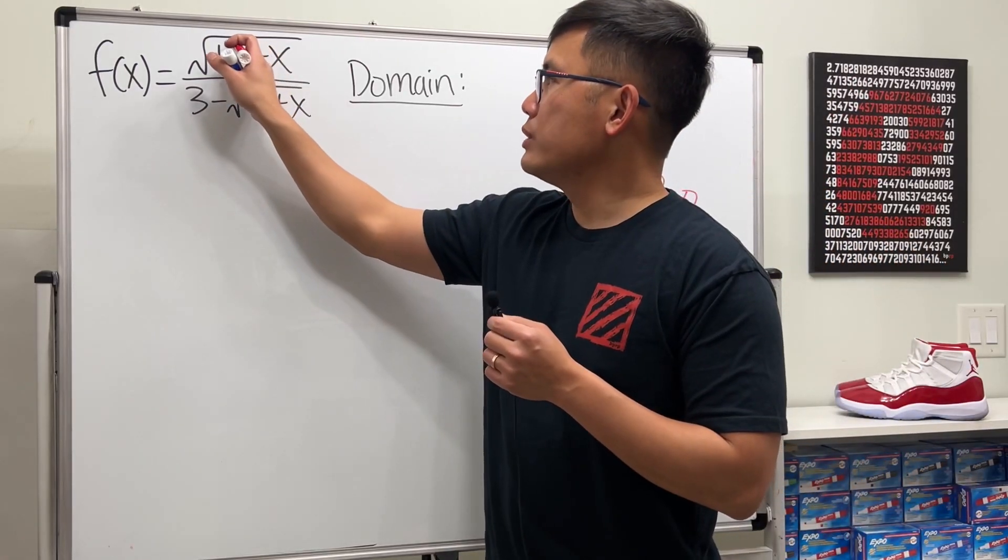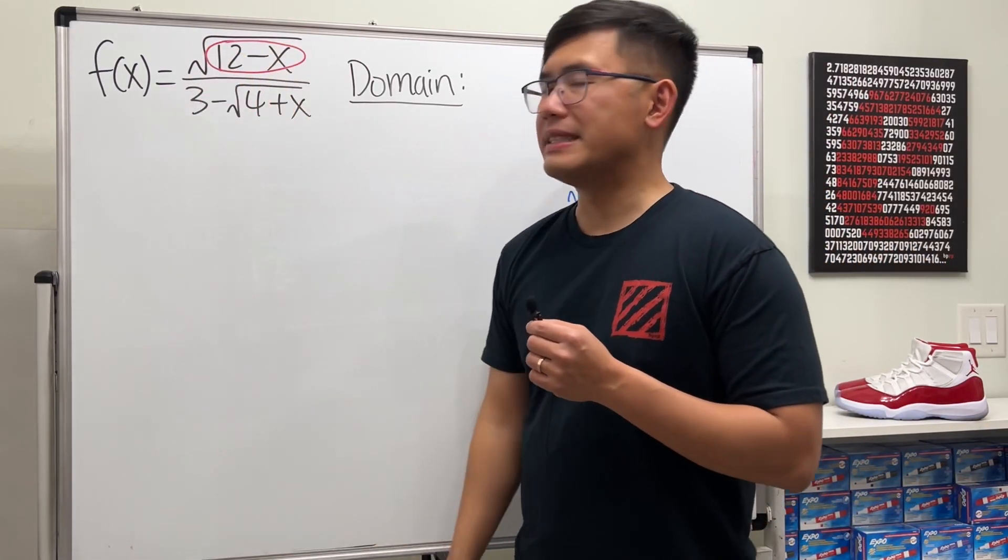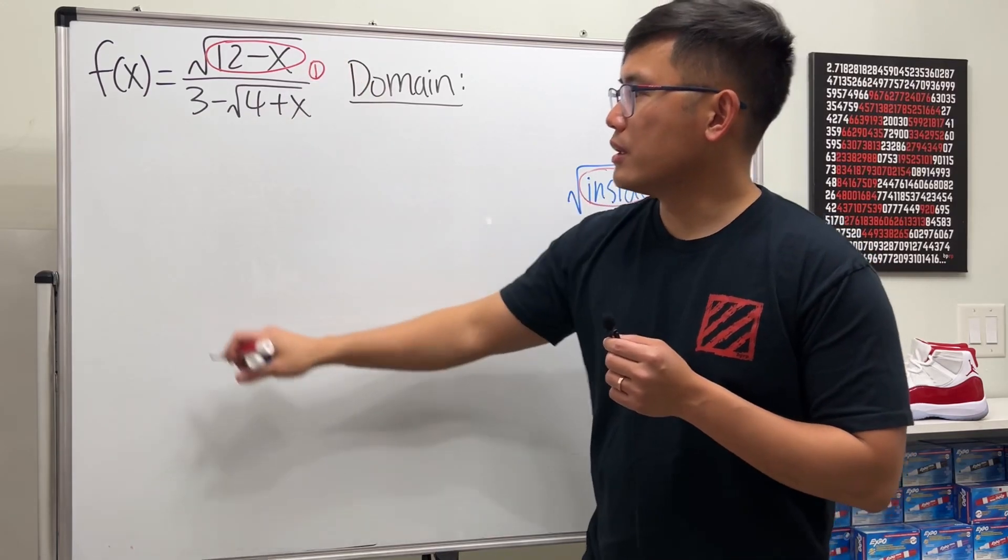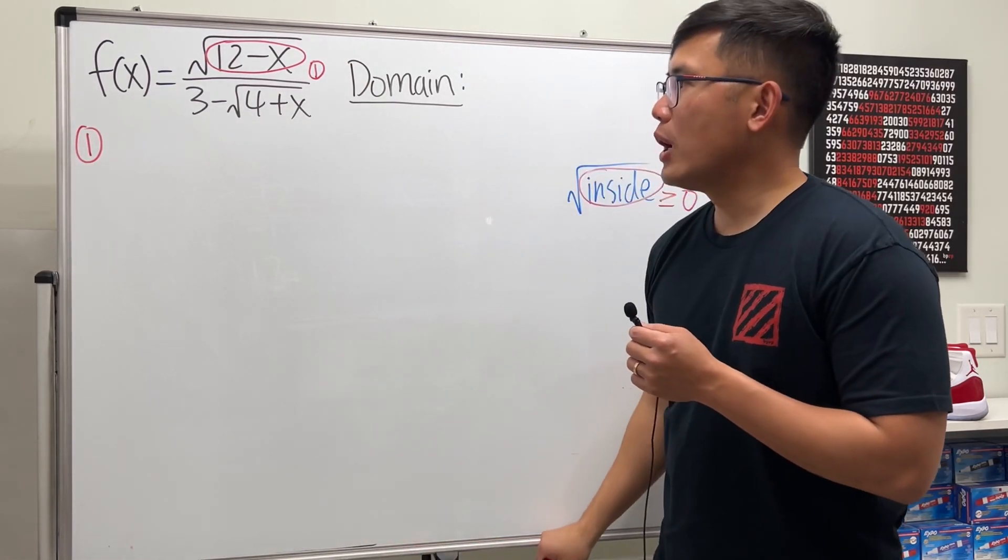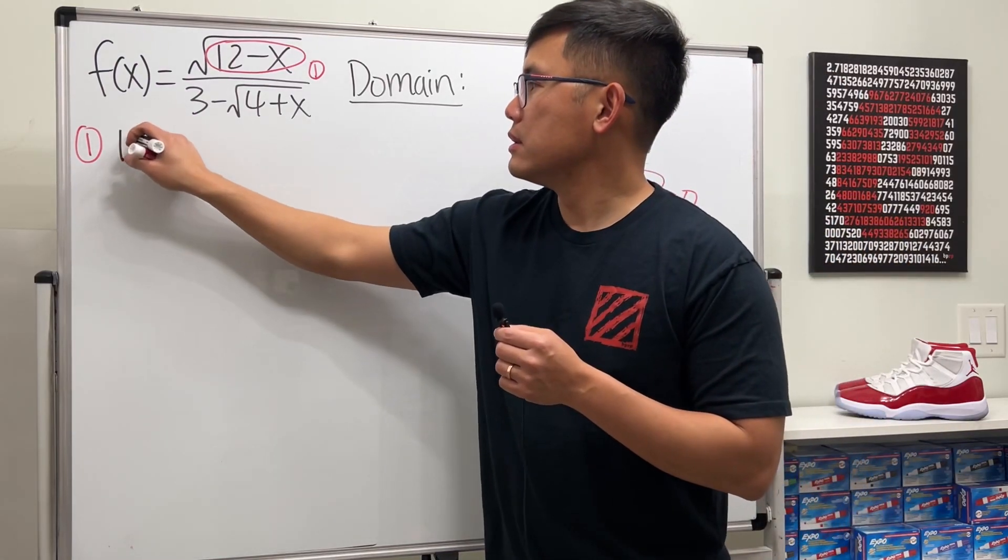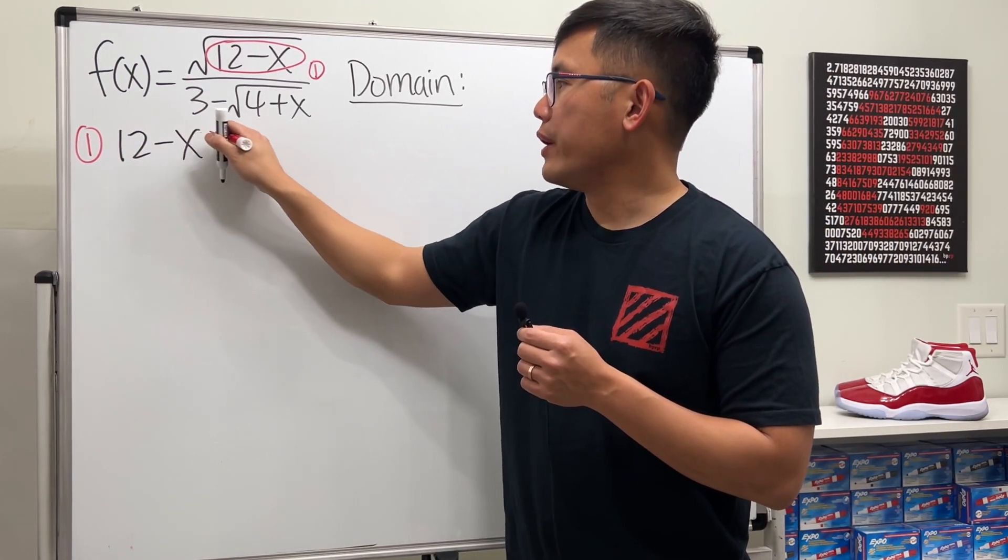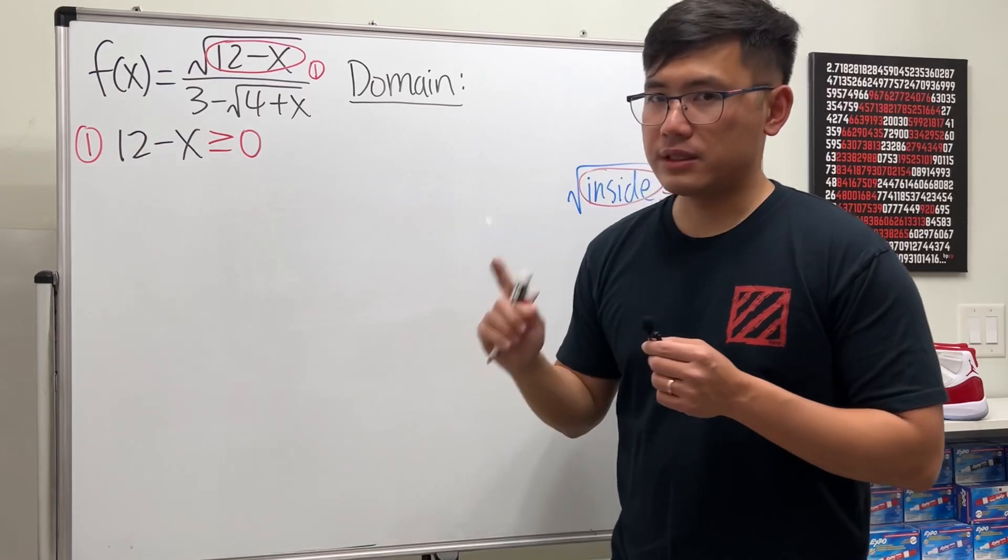With that being said, we see that we have this square root of 12 minus x, so that's going to be our first condition. We will have to make sure that 12 minus x is greater than or equal to zero. That's condition one.